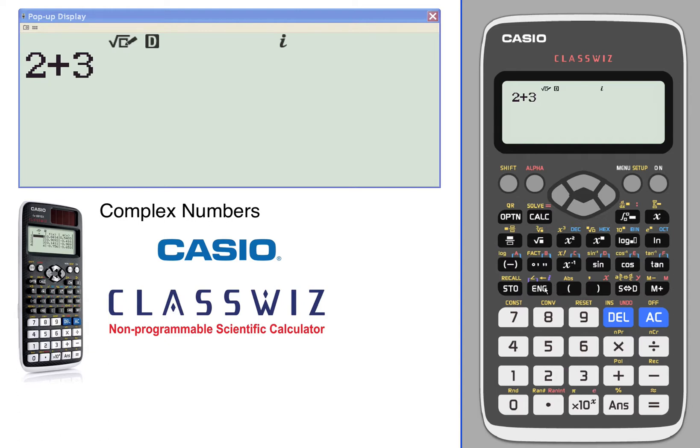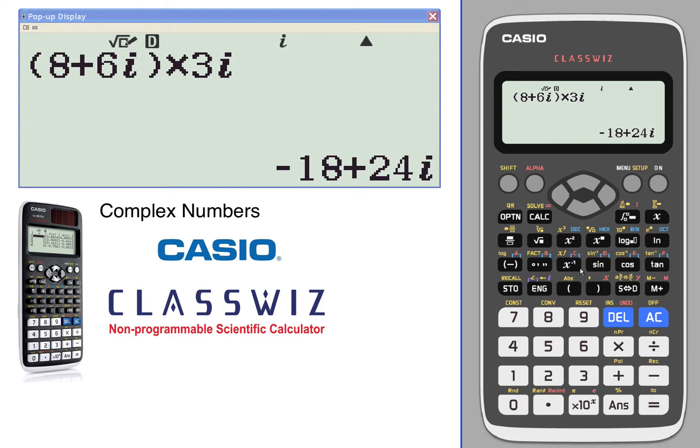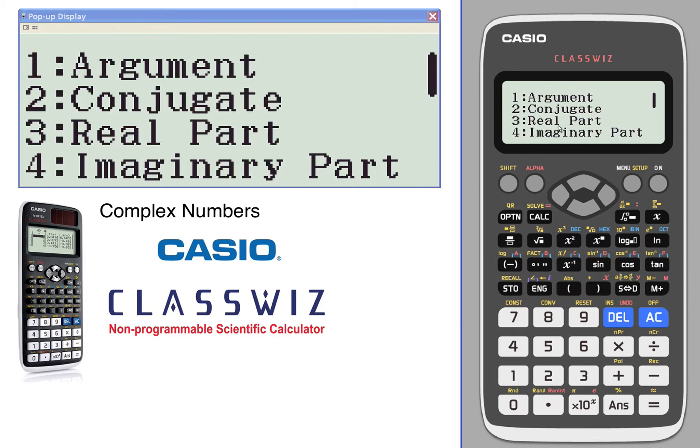Then we'll add 5 - 7i to get your answer in i notation. You can multiply with i—multiply that by 3i. We've also got some other options including finding the argument, conjugate, real part, and imaginary part.